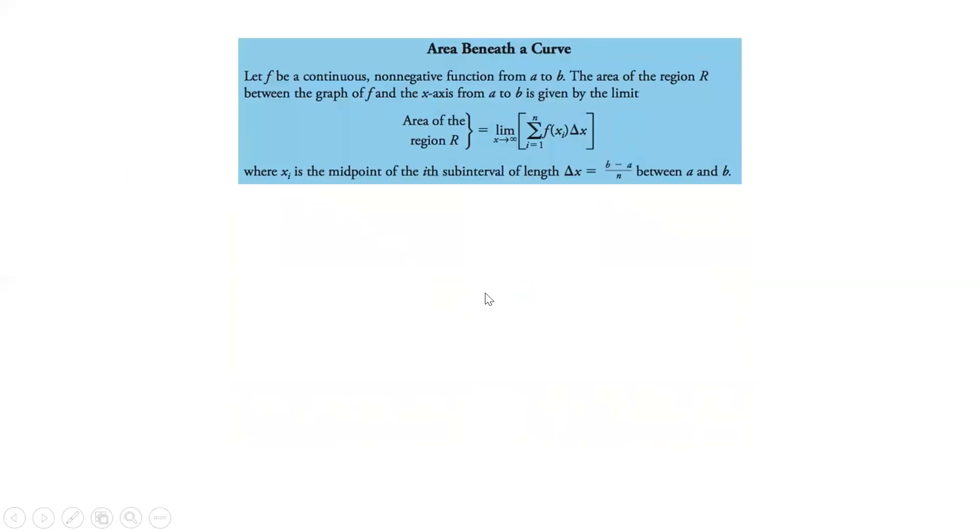And so, area beneath the curve. So let f be a continuous non-negative function from a to b, and the area of the region r between the graph of f and x-axis from a to b is given by the limit of.